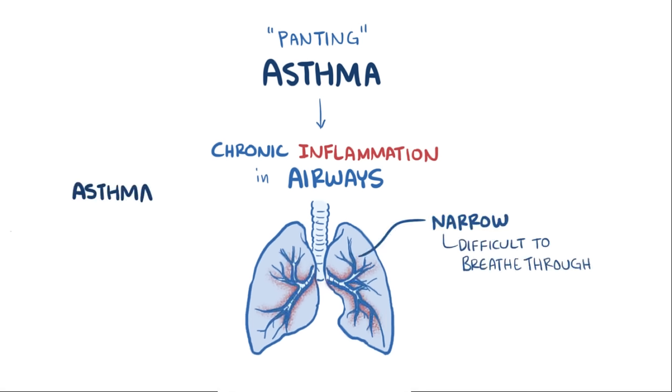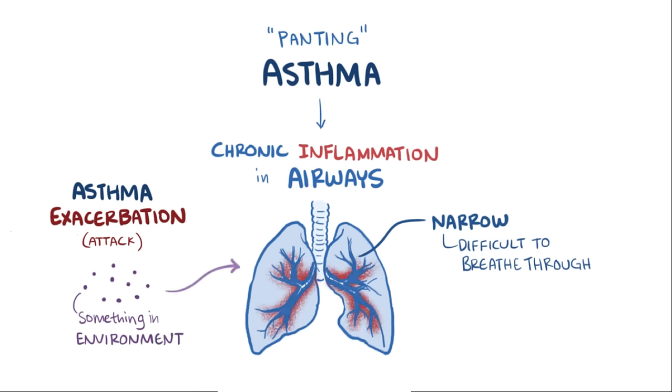People with asthma can have asthma exacerbations or asthma attacks, which are usually triggered by something in the environment which causes immune cells to generate inflammation in the lungs, which can make them even narrower and potentially be life-threatening.